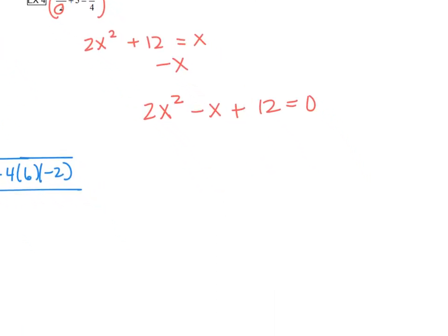Alright, now it looks better. We can identify our a, b, and c. a is 2, b is... there's a negative and nothing in front of the x, so that's going to be a negative 1, and c is 12.